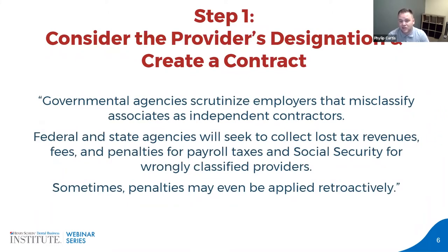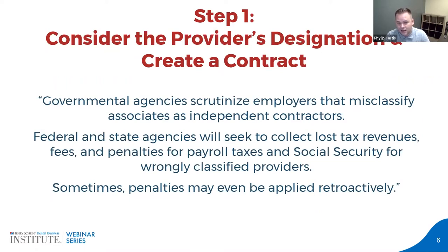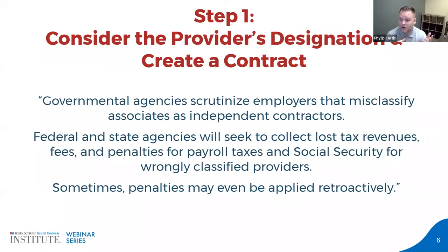Governmental agencies scrutinize employers who misclassify their associates as independent contractors. A lot of practices will set up an associate as an independent contractor as opposed to an employee, and it's very important to know the differences. Federal and state agencies will seek to collect lost tax revenues, fees, and penalties for payroll taxes and social security for wrongly classified providers. If you wrongly classify a provider as a 1099 independent contractor when they were actually an employee, you could be back-owed on payroll taxes and social security.